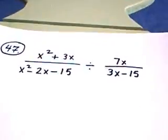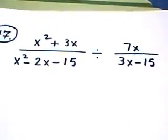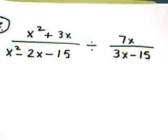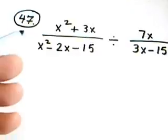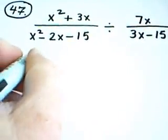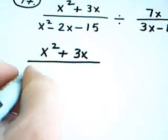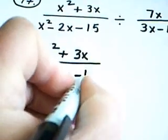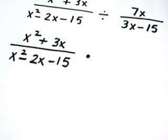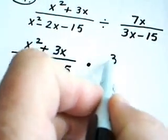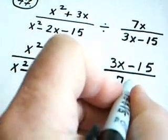When we look at the problem, the first thing we're going to do is turn it into a multiplication problem. So when you're dividing, what you're going to do is you're going to leave the first fraction alone, and you are going to multiply this by the reciprocal of the second fraction, which means the 3x minus 15 is now on the top in the numerator, and the 7x is in the denominator.